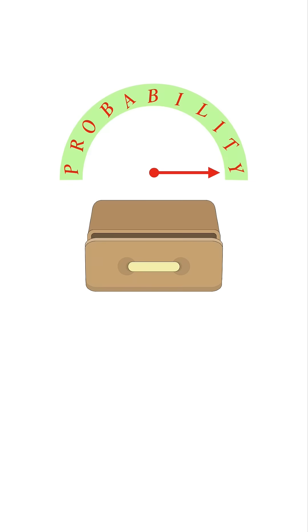The key idea here is that because you're not putting socks back, each draw changes what's left in the drawer. That means the probability isn't the same each time. It shifts as you go. This is what we call a dependent probability.